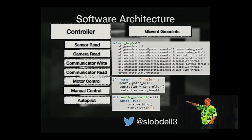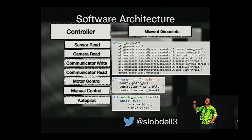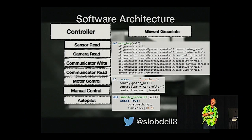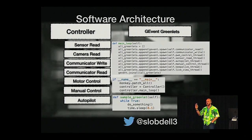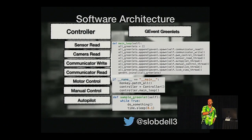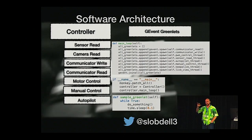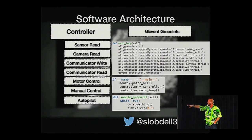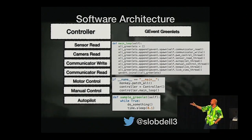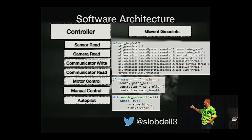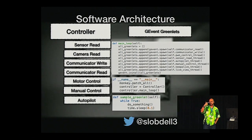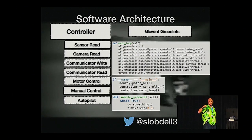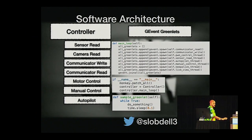We can also do monkey patching, which will take anything that naturally blocks — for example, a serial connection — and immediately yield to another thread. That also applies when we do time.sleep. The sample greenlet shows the basic structure: we're going to do something, sleep (which yields to other threads), and then once sleeping is complete, it gets reactivated.